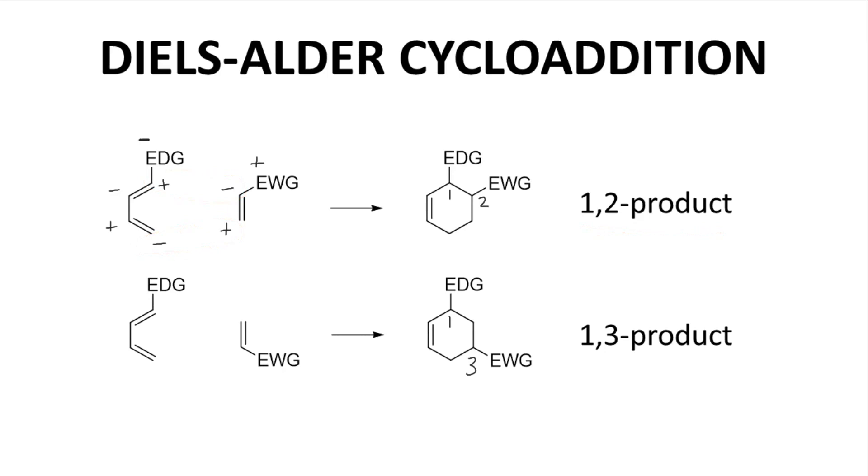In the bottom pathway, the regioisomer is disfavored. In the Diels-Alder, you cannot easily control the regiochemical outcome. The favored product is an inherent result of the electronic bias of the diene and dienophile.